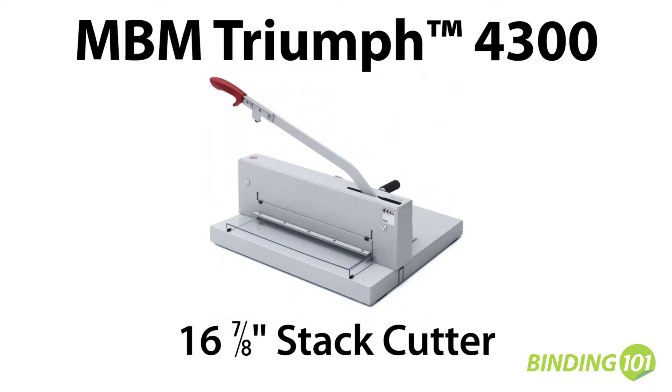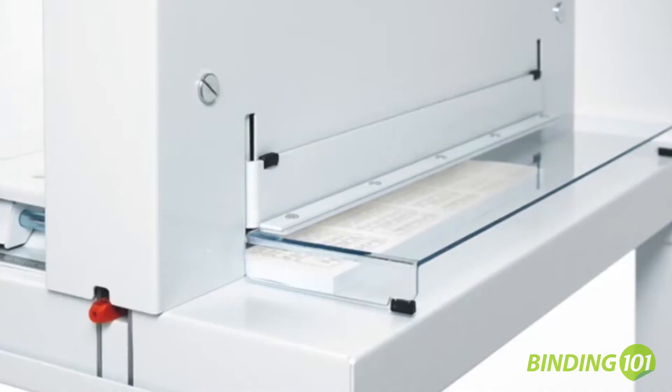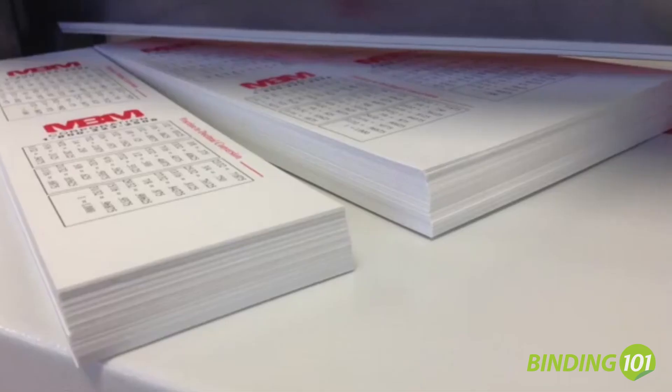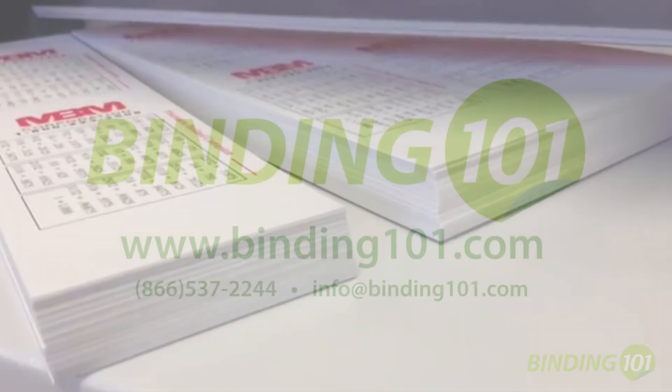The Triumph 4300 manual tabletop cutter has a cutting width of 16 7/8 inches and a cutting height of 3/4 of an inch.